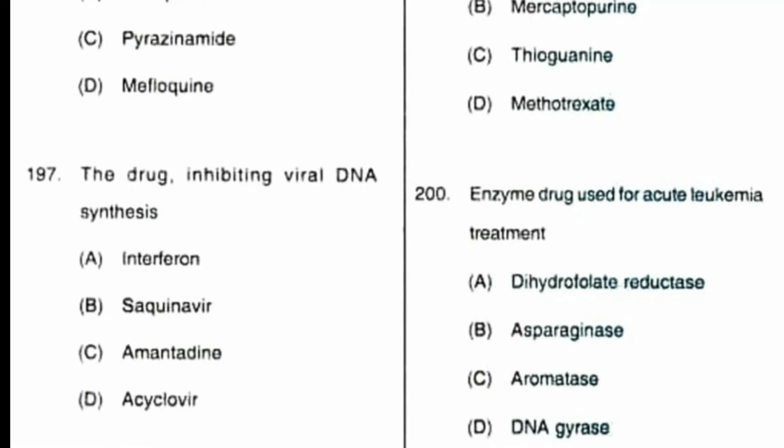Question number 197: the drug inhibiting viral DNA synthesis is? Option A: interferon, B: saquinavir, C: amantadine, D: acyclovir. Acyclovir is the correct answer, option D. It inhibits DNA polymerase enzyme and thereby inhibits DNA synthesis.